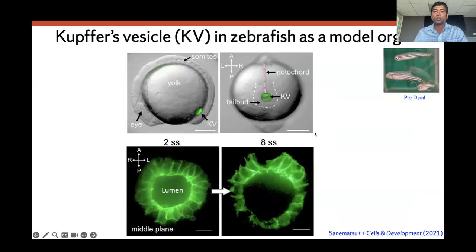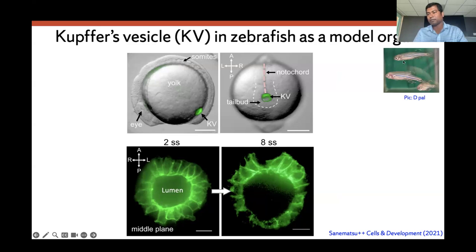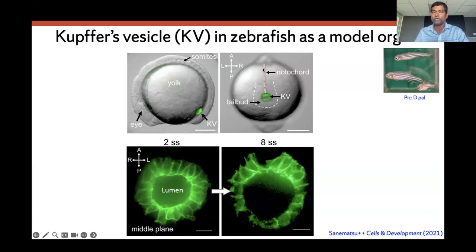We use Kupffer's vesicle, which is the left-right organizer of the zebrafish. The zebrafish is centimeter-scale. You can see the yolk, and the green spot is the Kupffer's vesicle. There is an important structure attached to it called the notochord, which is another type of tissue — a spine-like structure. As the zebrafish develops, this Kupffer's vesicle moves through the tailbud cells.